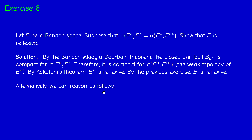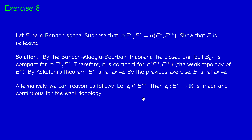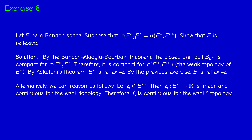There is another way using exercise 4 of the previous video. We take an element Xi in the bidual and want to prove it belongs to J(E). By definition of the bidual, Xi is continuous for the weak topology. Therefore it's continuous for the weak-star topology, since they coincide. By exercise 4 of the previous video, Xi must belong to J(E).